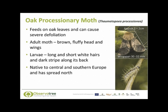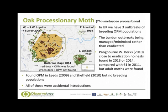Oak processionary moth is native to central and southern Europe but now it has spread northwards, and the moth is present in the UK. We have had three outbreaks of breeding oak processionary moth, all of them in southern England. This slide illustrates the distribution of the moth so far. You can see in the centre is a large outbreak affecting west and south-west London and Surrey.